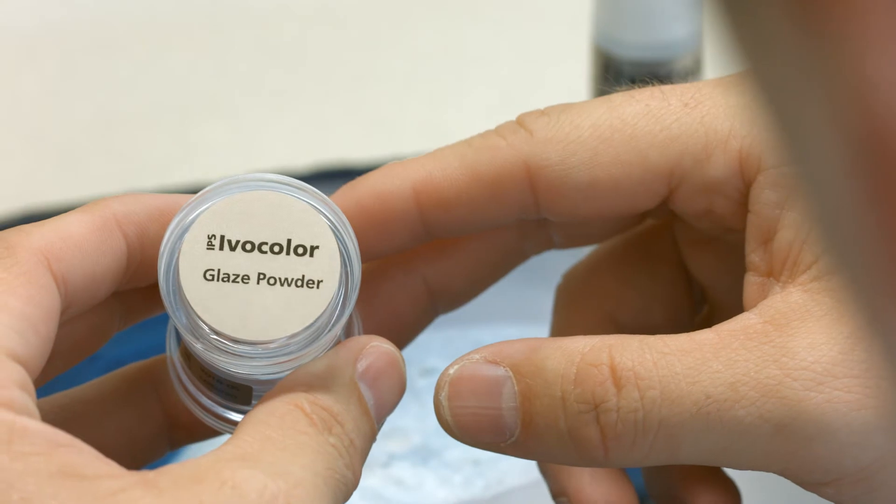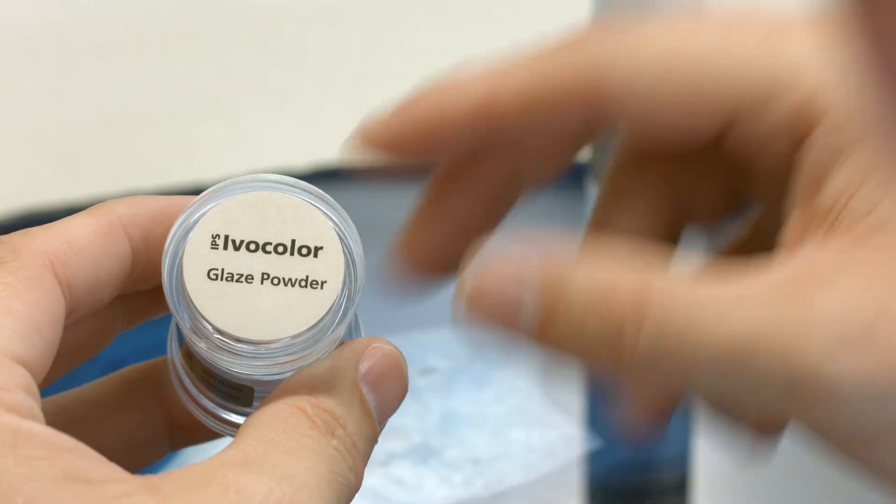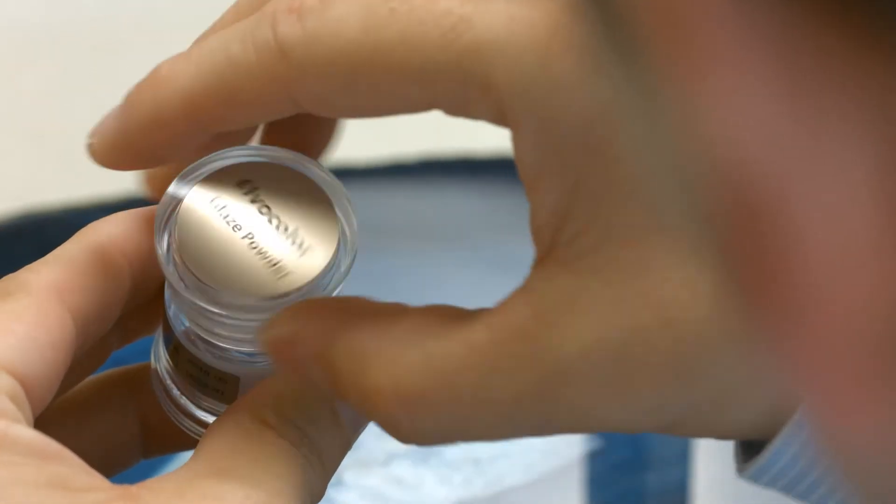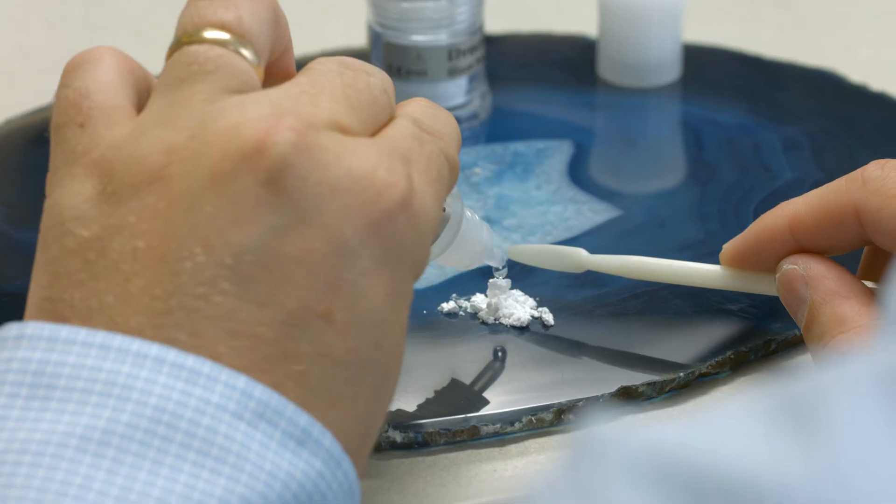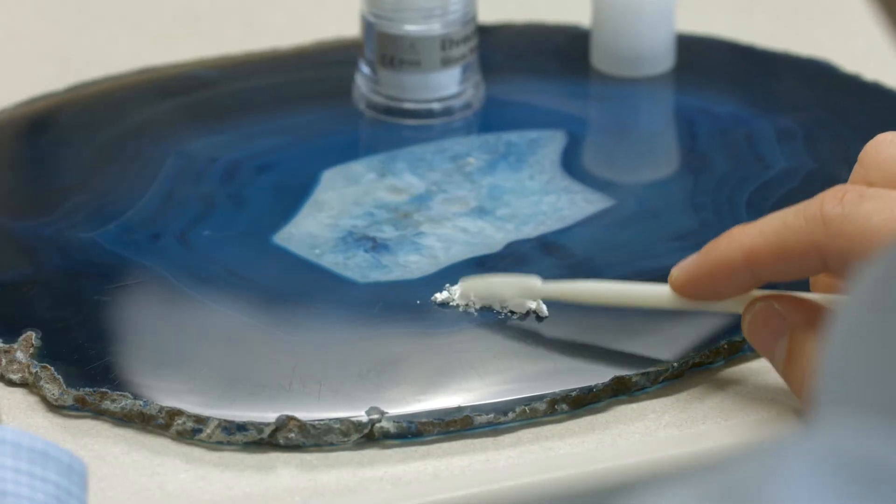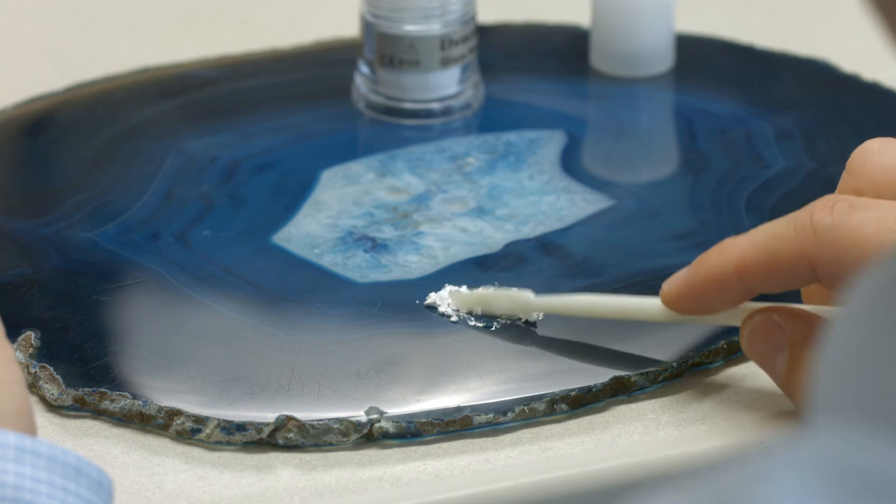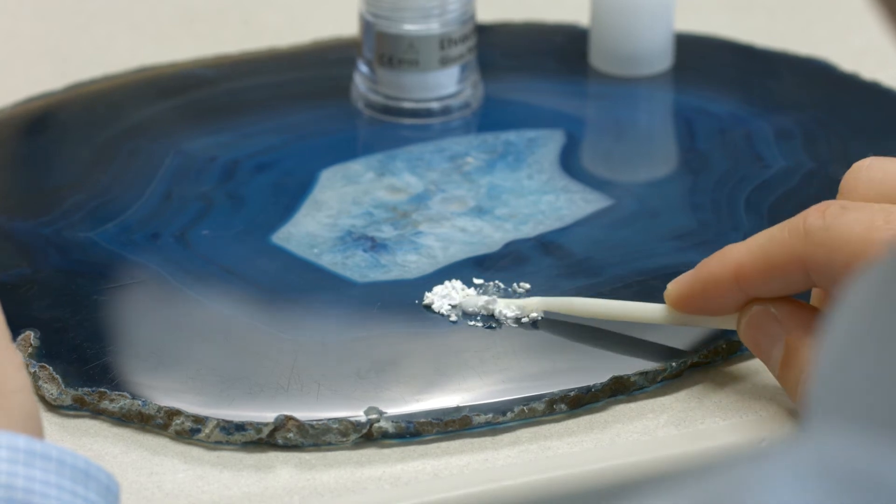IPS Ivocolor Glaze Powder and IPS Ivocolor Glaze Paste are available for glazing the restoration. You simply dispense the desired quantity and mix the products with one of the two IPS Ivocolor mixing liquids.